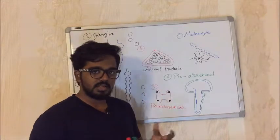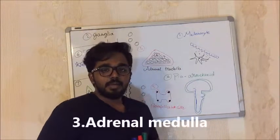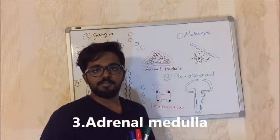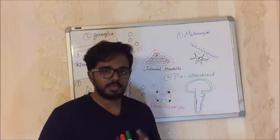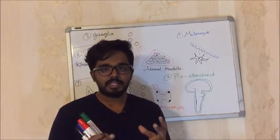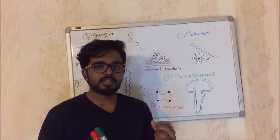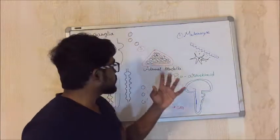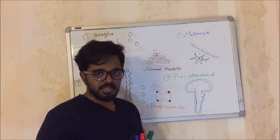Neural Crest Cells also give rise to the adrenal medulla. The adrenal gland sits superior to the kidney and consists of an adrenal cortex and an adrenal medulla. The adrenal medulla is essentially a collection of modified sympathetic ganglia — it forms from sympathetic ganglia, and its cells are derived from Neural Crest Cells.